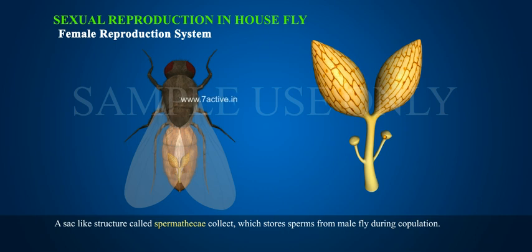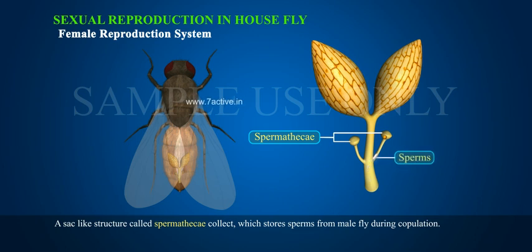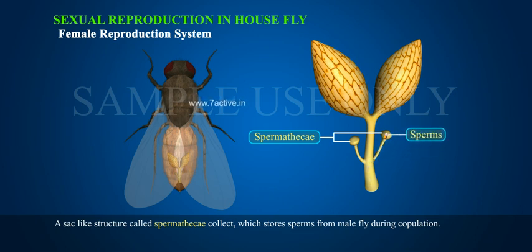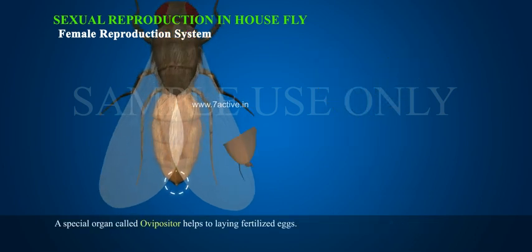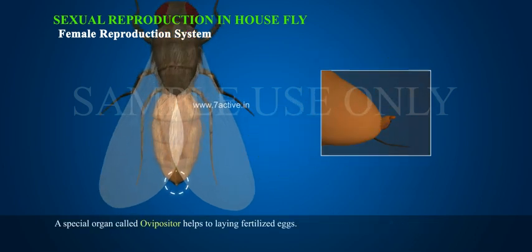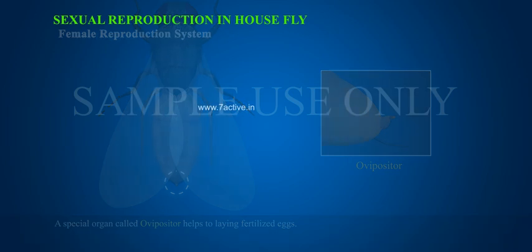A sac-like structure called spermatheca stores sperms received from the male fly during copulation. A special organ called ovipositor helps to lay fertilized eggs.